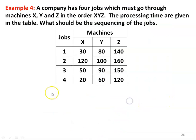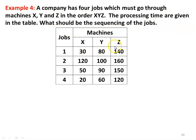We take up another example, example number 4. A company has 4 jobs which must go through machines X, Y, Z in the order X, Y, Z. The processing times are given: machine X — 30, 120, 50, 20; machine Y — 80, 100, 90, 60; machine Z — 140, 160, 150, 120.